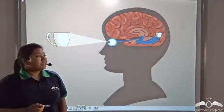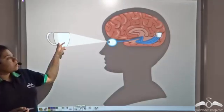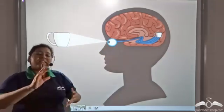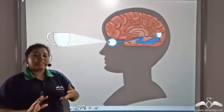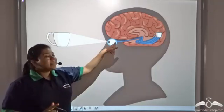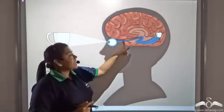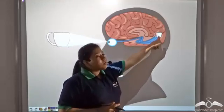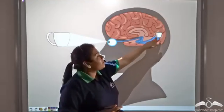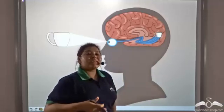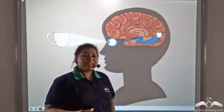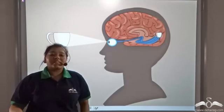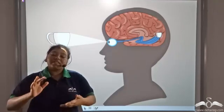Now the image of an object which falls on the retina is inverted. But when the optic nerves take the visual impulses to the occipital lobe of the cerebrum, it becomes erect again, and that is why we see an object erect and not inverted.